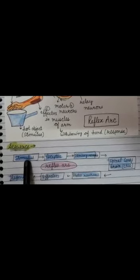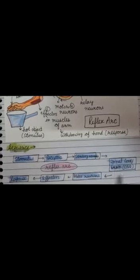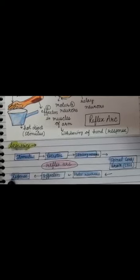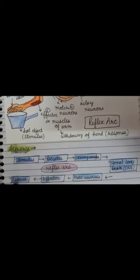Those reflex actions are called cranial reflexes. When stimulus is taken by limbs and trunk, it goes to the spinal cord; if taken by eyes, ears, or nose, it goes to the brain. In both cases, a response is generated, taken by motor neurons to the effectors, which then produce the response accordingly. This is the sequence of events during reflex arc.